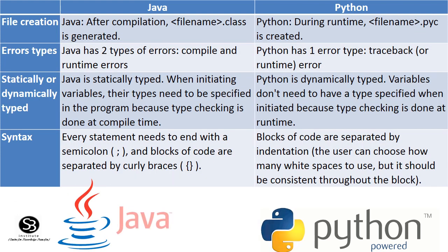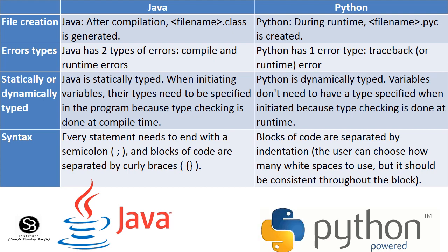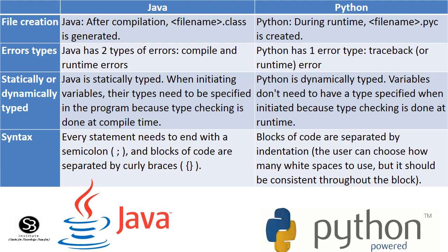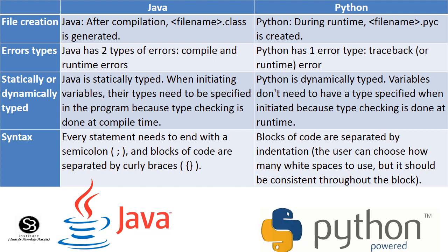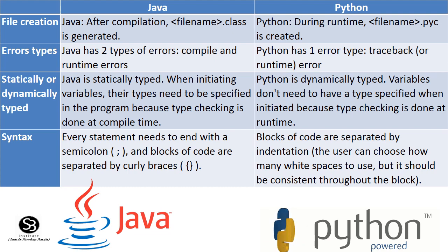For file creation: after Java compilation, a filename.class file is generated. In Python, during runtime, a filename.pyc file is created. For error types: Java has two types — compile-time and runtime errors. Python has traceback or runtime errors. Regarding typing: Java is statically typed, where variable types are declared. Python is dynamically typed.